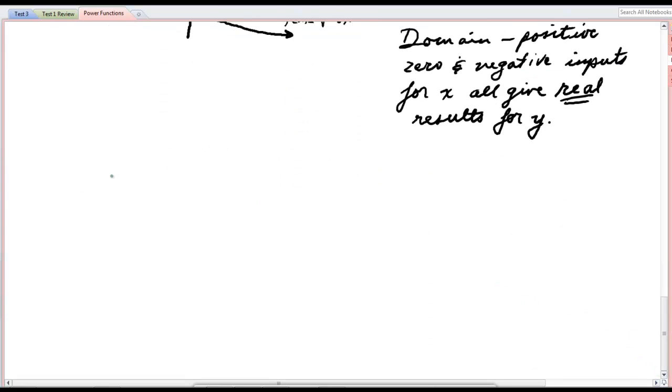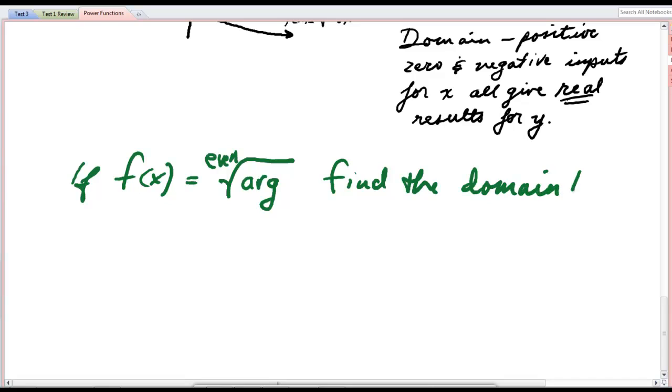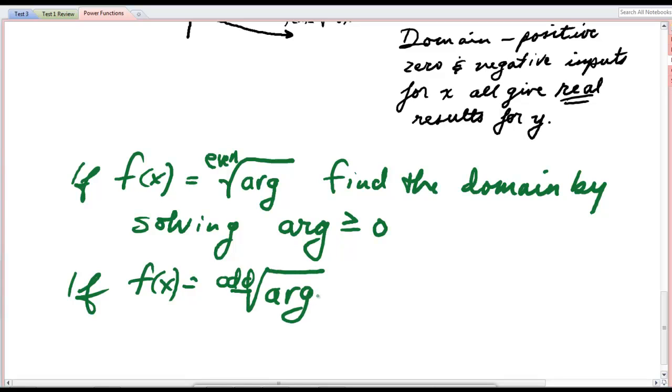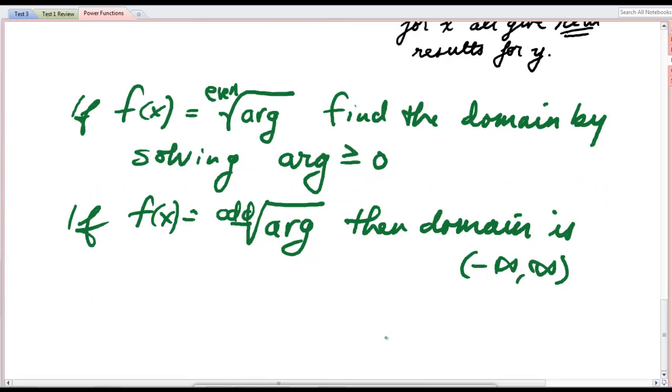If f of x equals even root of some argument, find the domain by solving argument greater than or equal to 0. If f of x equals odd root of some argument, then domain is unrestricted. It's negative infinity to infinity. That's all I got to say about that. Hopefully, that refreshes your memory.